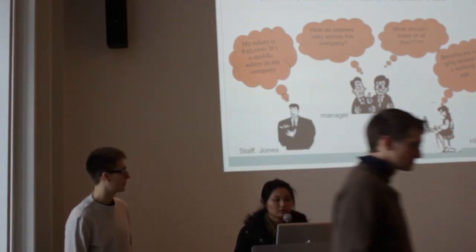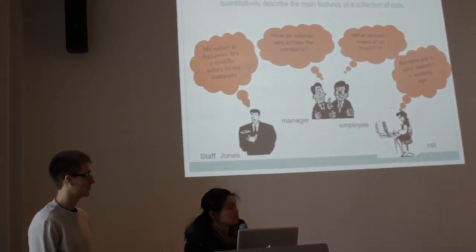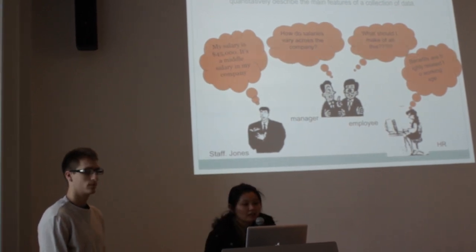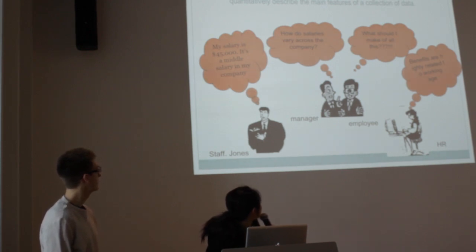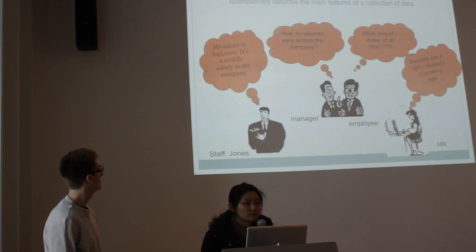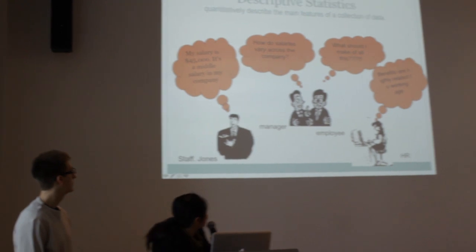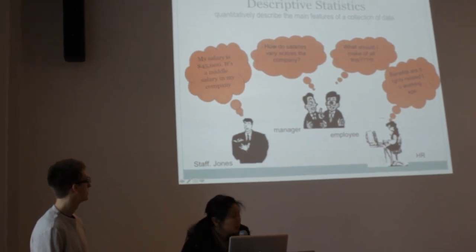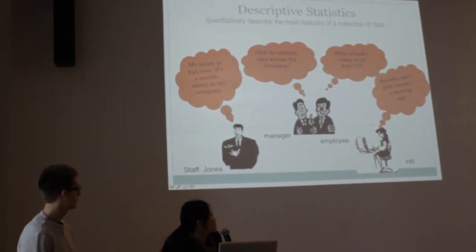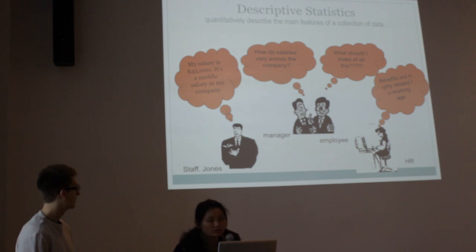Hi. Now we will talk something about descriptive statistics. Descriptive stats completely describe the main features of a collection of data. Let's look at this cartoon. The first step says, my salary is 45,000, a middle salary in my company. So 45,000 is a median, so it's a concept in central tendency. The manager asks, how do salaries vary across the company? So it's a concept in dispersion. The last is some concept in distribution. So this cartoon shows three different aspects in descriptive stats.